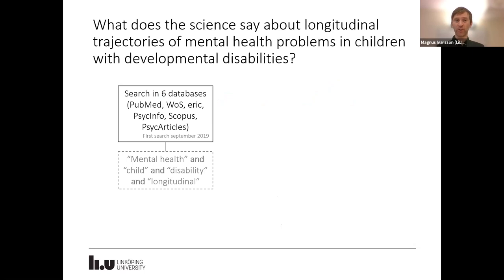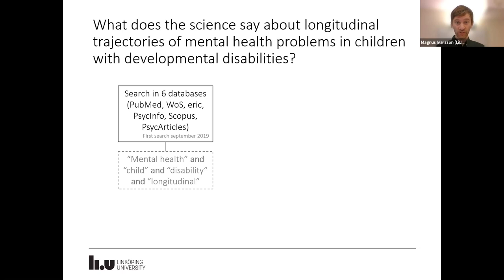What does the science say about longitudinal trajectories of mental health problems in children with developmental disabilities? To answer this question, we set out to systematically review the literature in the field. I'm going to give a short summary of some of the results. We did the search in six databases in September 2019, using a combination of search words and many different versions of those concepts.